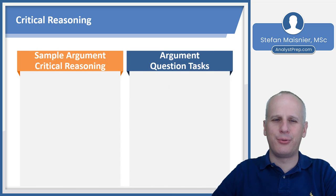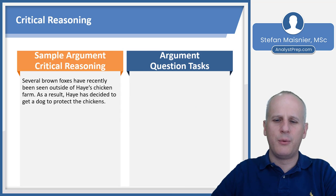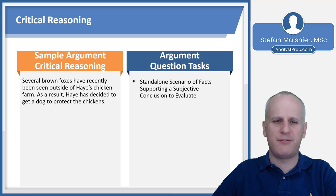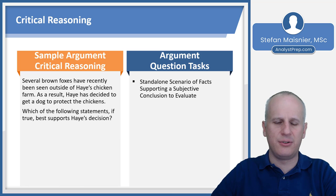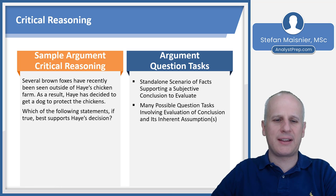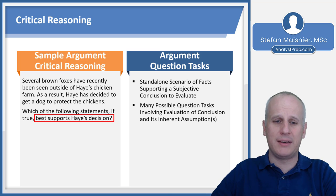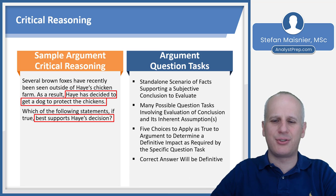Let's look at how a critical reasoning question will appear. We have a standalone scenario: several brown foxes have recently been seen outside of Hay's chicken farm. As a result, Hay has decided to get a dog to protect the chickens — that result functions as the conclusion. The question stem asks which of the following statements, if true, best supports Hay's decision. There are many possible question tasks involving evaluation of the conclusion and inherent assumptions. Your five choices must be applied as true to determine a definitive impact, in this case to support Hay's decision to get a dog.